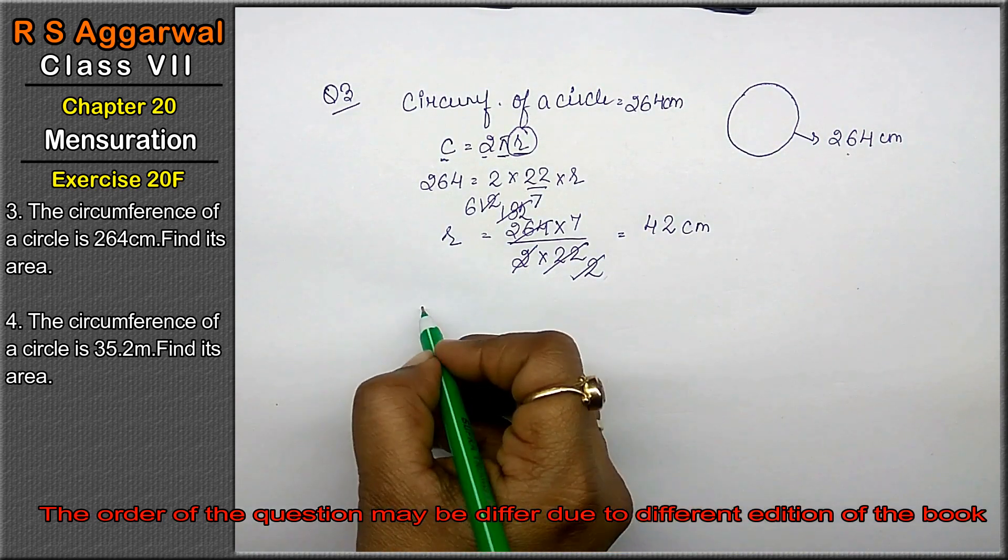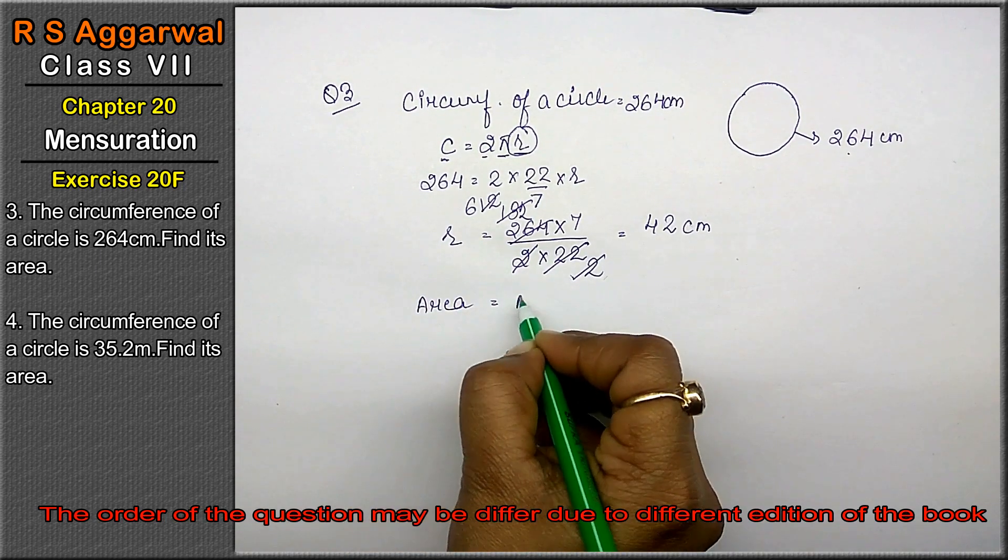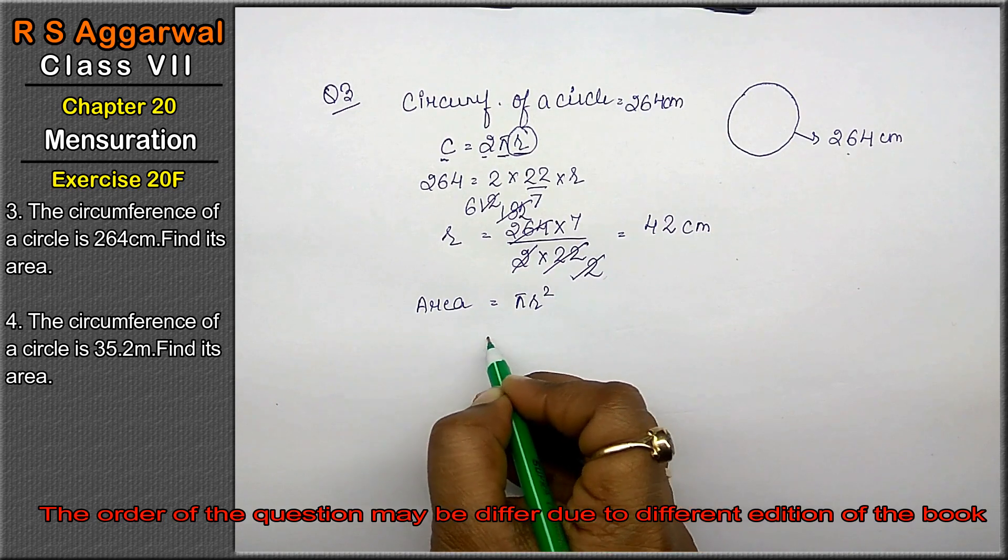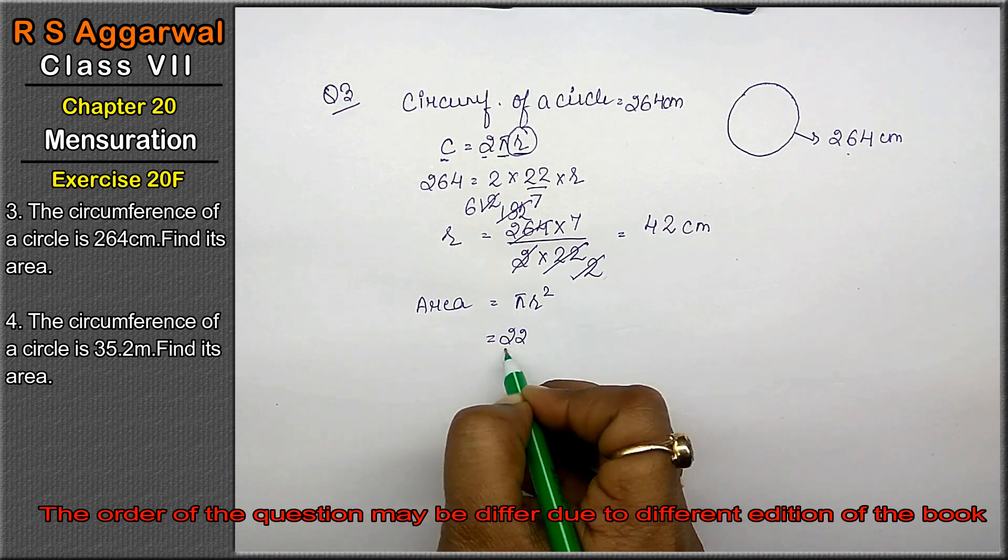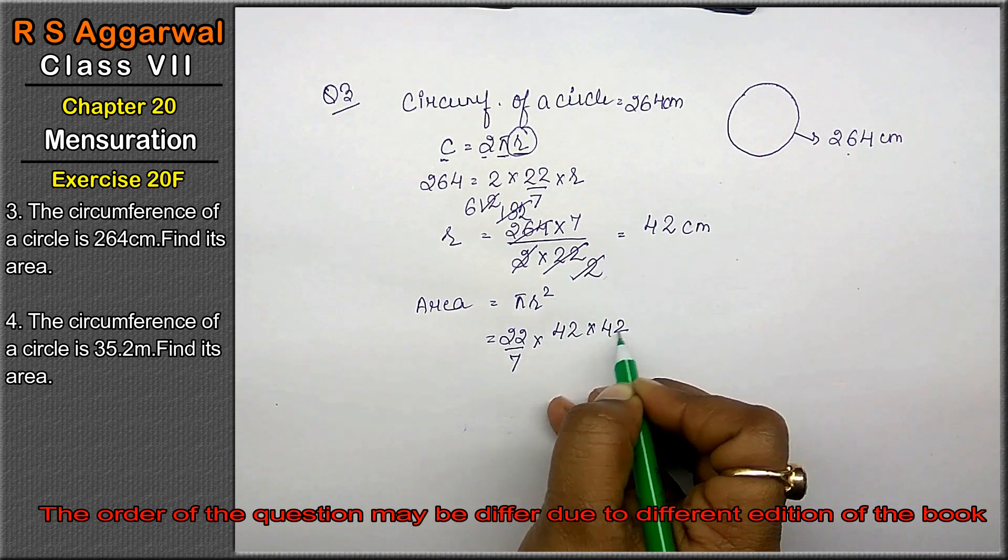Now radius hamay pata chal gaya hai. Ab area ka formula lagayenge. Area equals to pi r square hota hai. Pi ki value 22 upon 7. R square means 42 into 42.